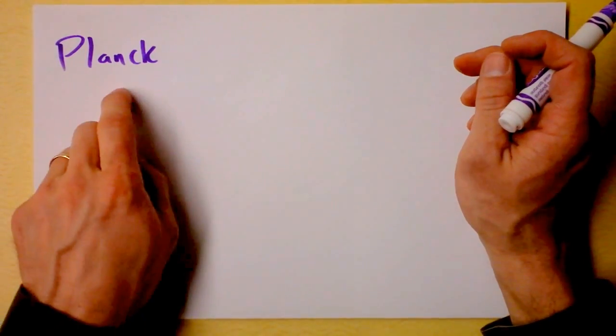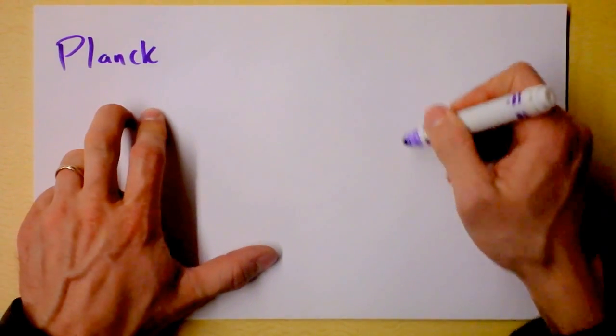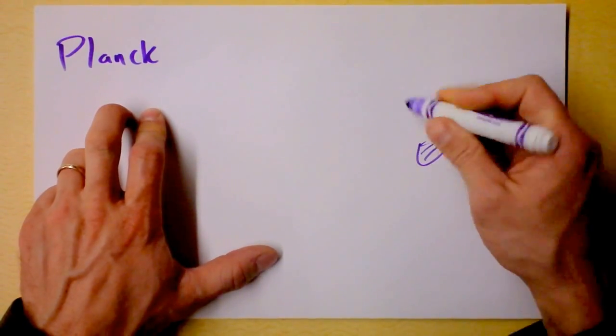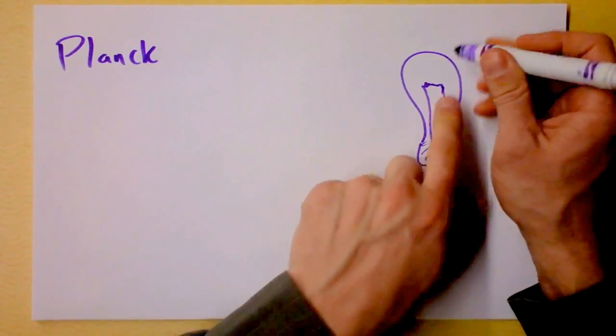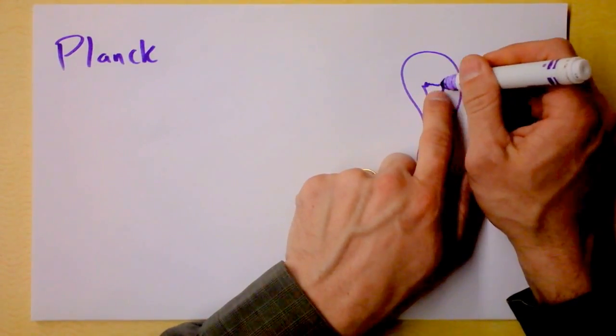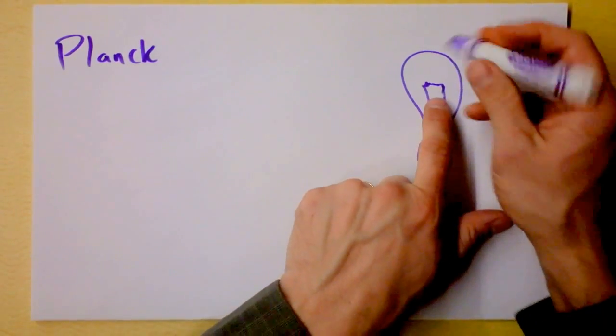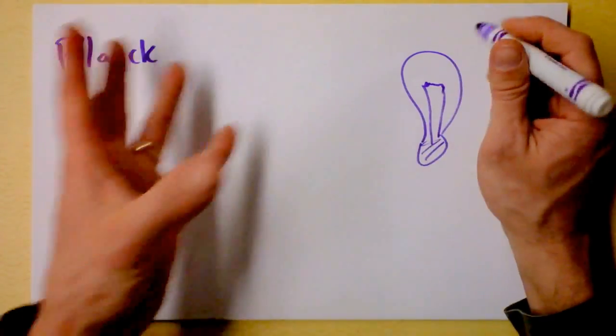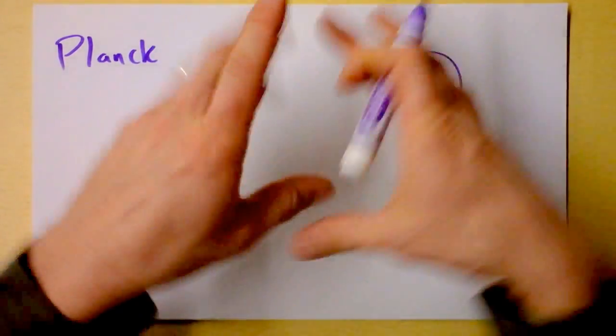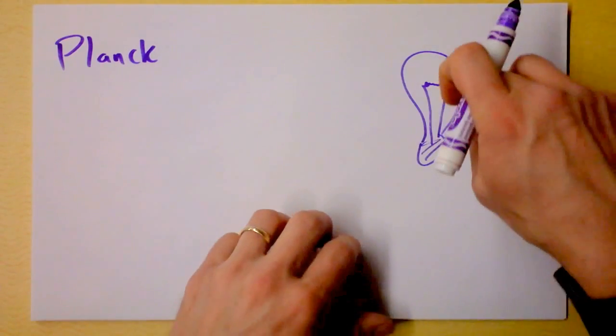Max Planck was hired by utility companies to find out how to make a nice light bulb. So he was thinking about light bulbs like this, and this is kind of a black body because it's a filament in here that's designed to heat up and it emits radiation, and the power going into the light comes out mostly as heat, but a tiny bit as light, and he was trying to maximize the amount that came out as light.